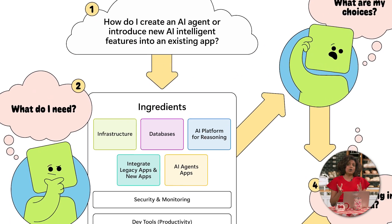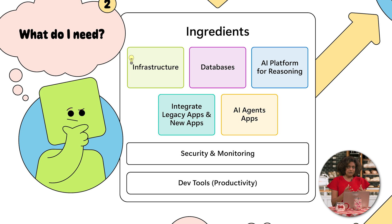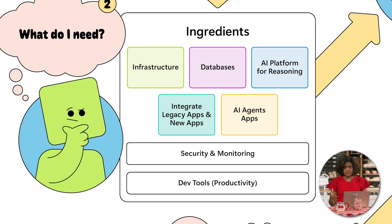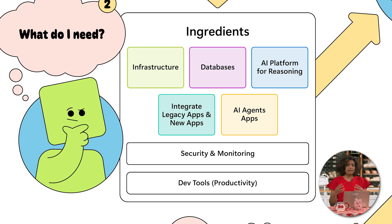Think about the ingredients. You'll need an infrastructure to deploy the application on. You'll need databases to have your data housed in. Then you'll need an AI platform where you do all the reasoning, and an extension of that platform would allow you to run and operate your entire model system and AI app. And then you'd need that application to integrate with other systems — existing or external. That's where the integration layers come in, and then that entire application would talk to other AI agents or other apps.